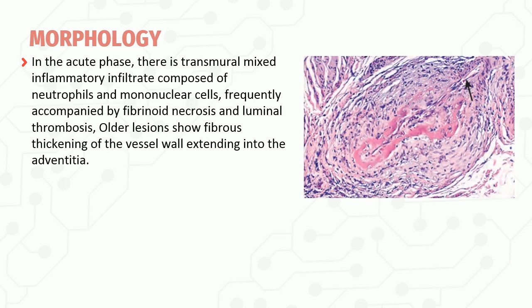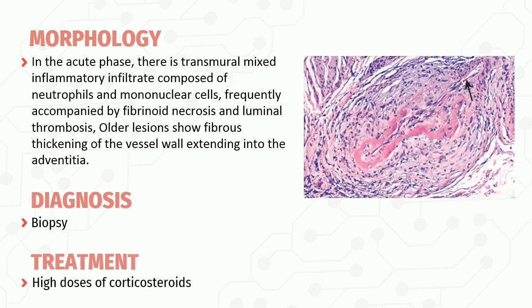In the acute phase of PAN, there is a transmural mixed inflammatory infiltrate composed of neutrophils and mononuclear cells, frequently accompanied by fibrinoid necrosis and luminal thrombosis. Older lesions show fibrous thickening of the whole vessel wall extending to the adventitia. Diagnosis of PAN is by biopsy, and treatment uses high doses of corticosteroids.